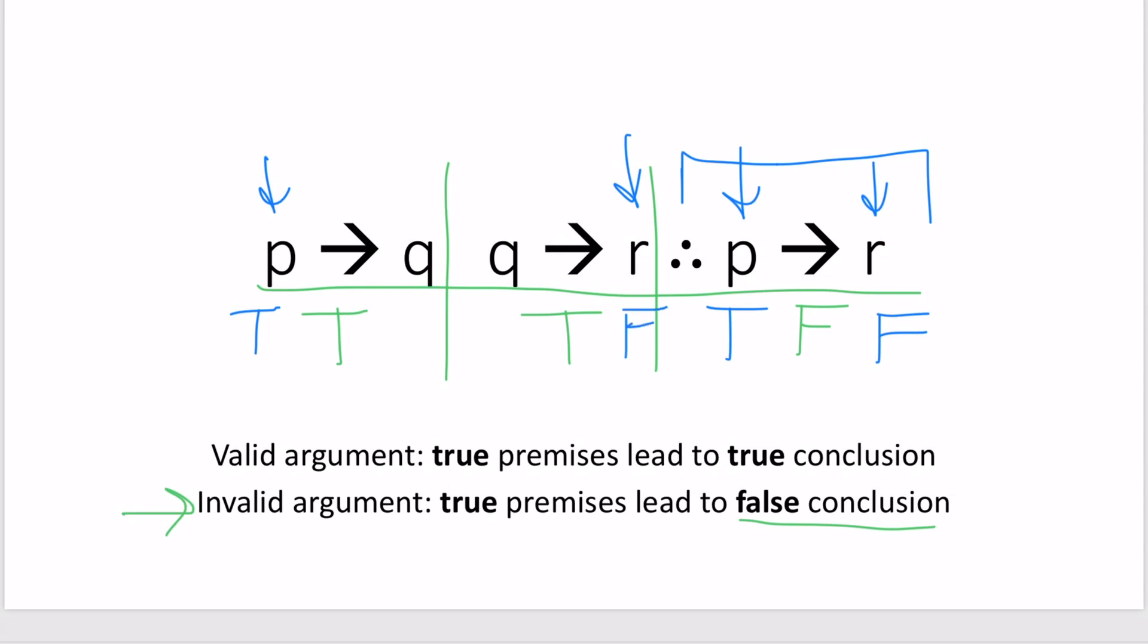Alright, so far so good. Now, we need to figure out what q is. In the second premise, right here, if r is false, but the entire premise is true, q has to be false. Otherwise, the conditional would be false, and that wouldn't work.